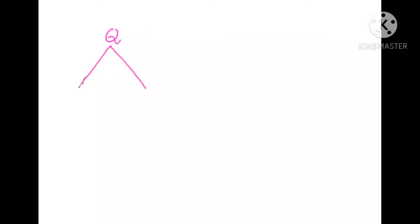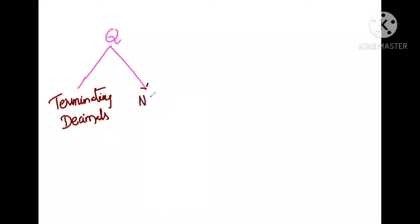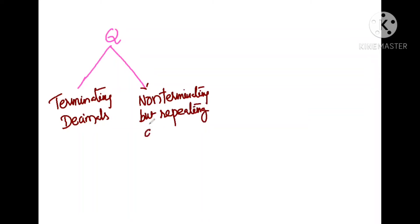Rational numbers are of two types. The first type is terminating decimals, and the second type is non-terminating but repeating decimals.